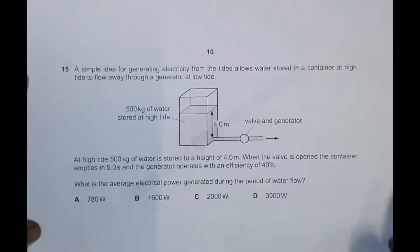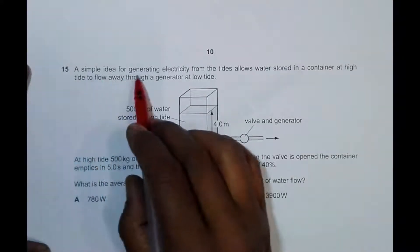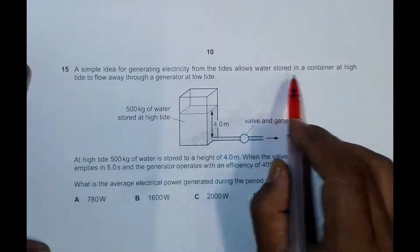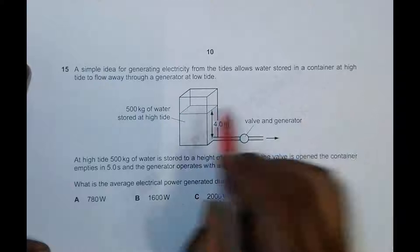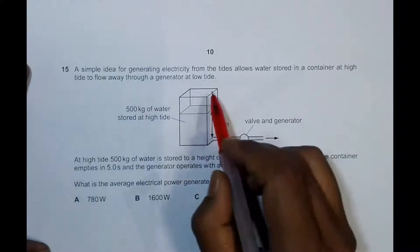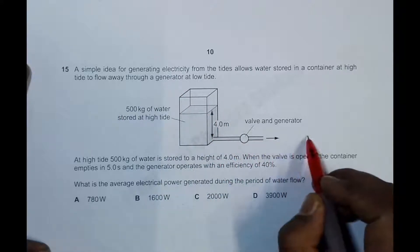This question is about a tidal system used for generating current. A simple idea for generating electricity from the tides allows water stored in a container at high tide to flow away through a generator at low tide. We have a zone of high tide here that will go through a certain region of low tide.